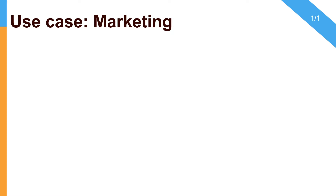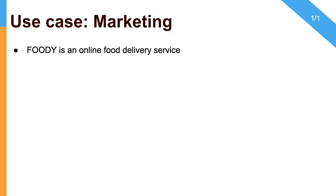Let us discuss the marketing use case. We will be taking an example of Foodie, which is an online food delivery service or platform that we have been building. If you watched my other videos on Portfolio for Jira — or Advanced Roadmaps for Jira — I used this example of building an online food delivery service. They have now launched their services and mobile apps on Android and iOS, and it is time to do some marketing.